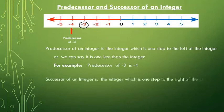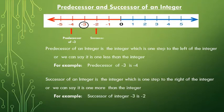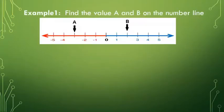The successor of an integer is the integer which is one step to the right of the given integer, or we can say it is one more than the given integer. For example, the successor of the integer minus three is minus two. Our first example is to find the value of a and b on the number line.